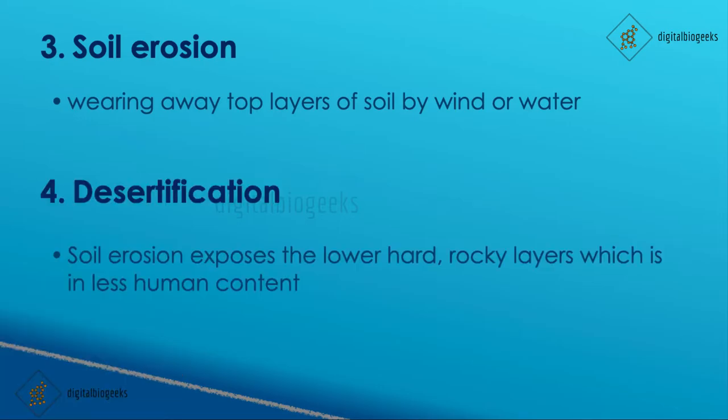Desertification. When soil erosion happens, the top layers of soil wear away, exposing the lower layers which are hard and rocky. This layer is very low in humus — the organic substance — and is very less fertile. Slowly this land will convert to a desert.